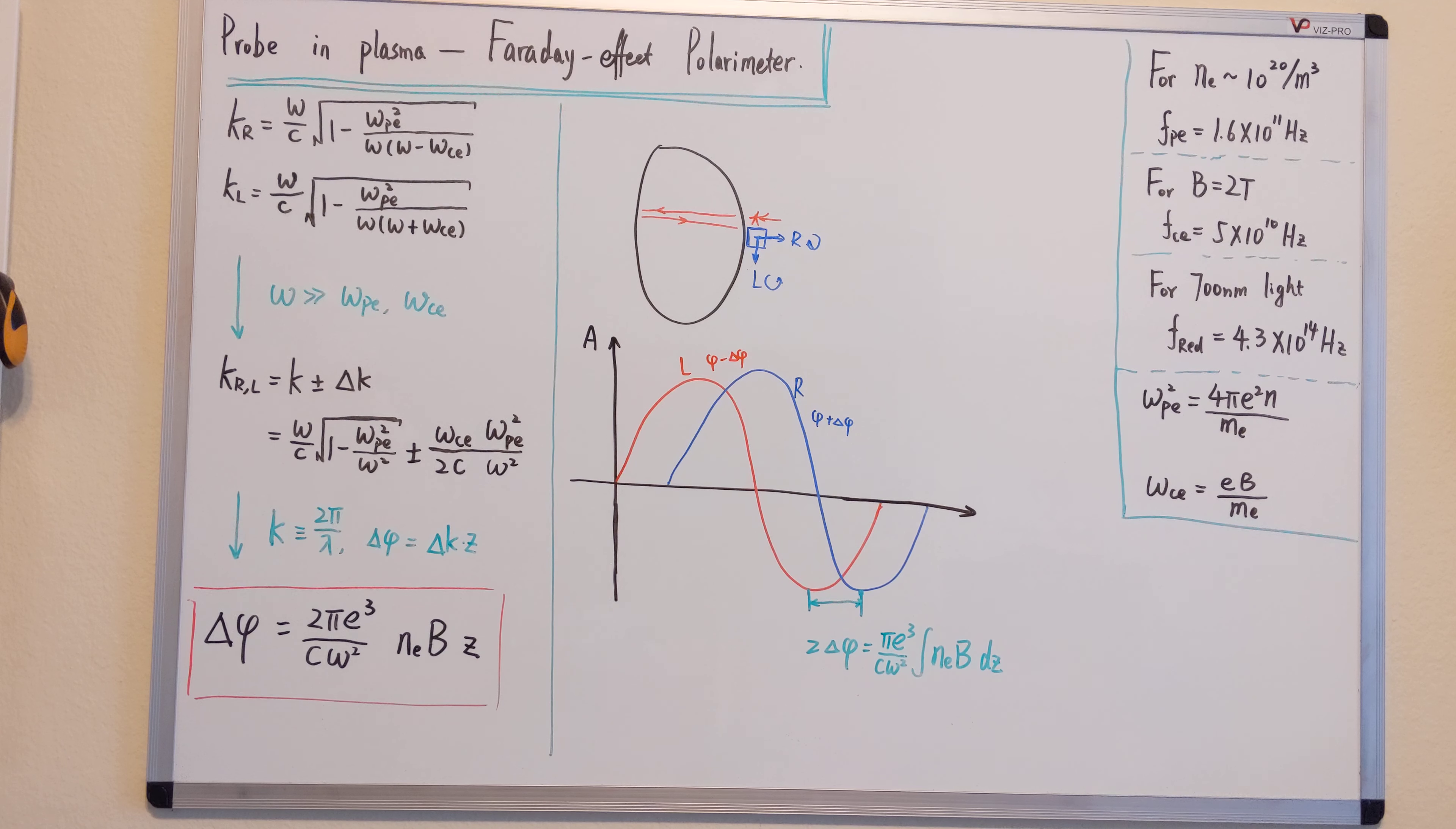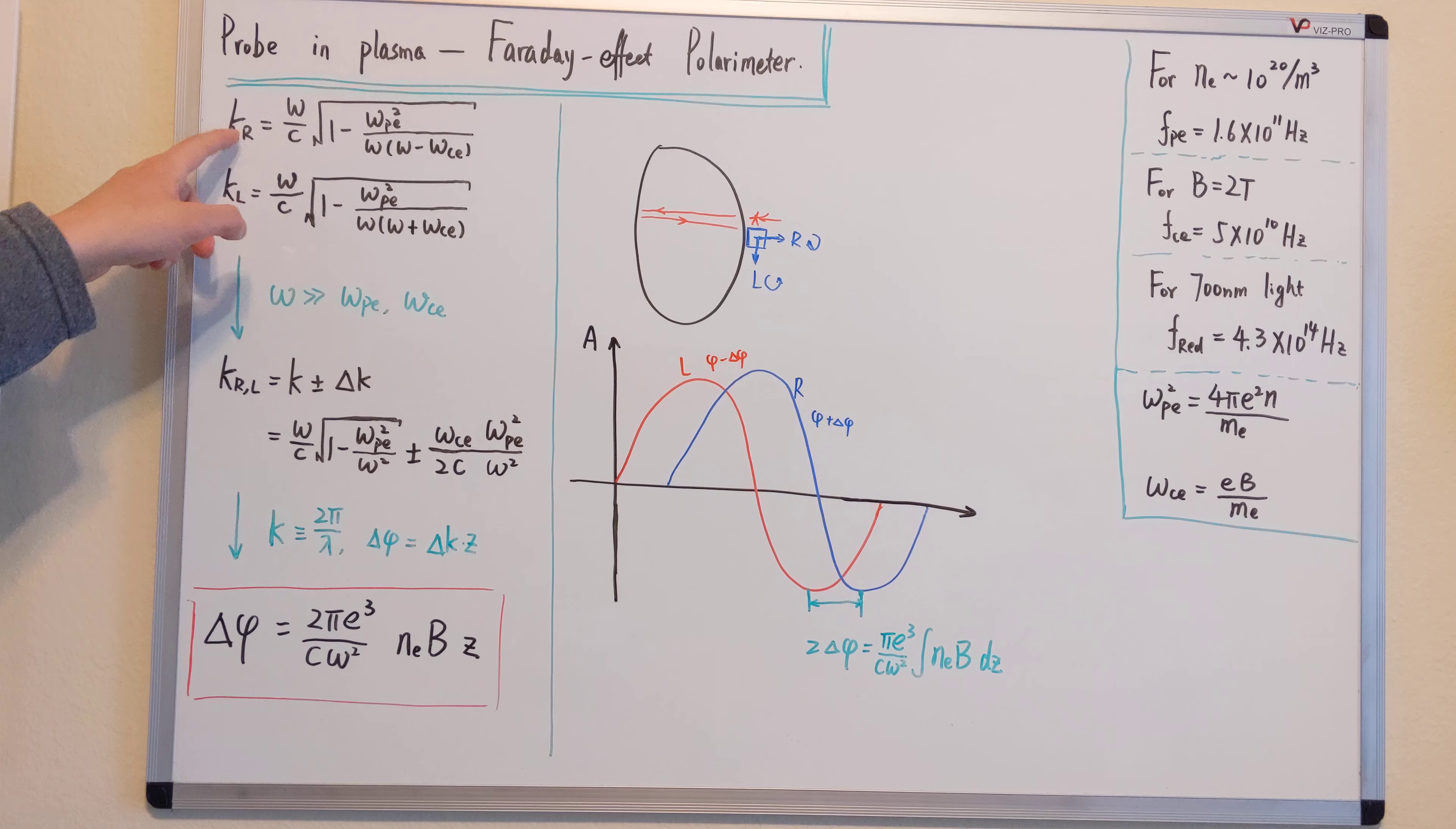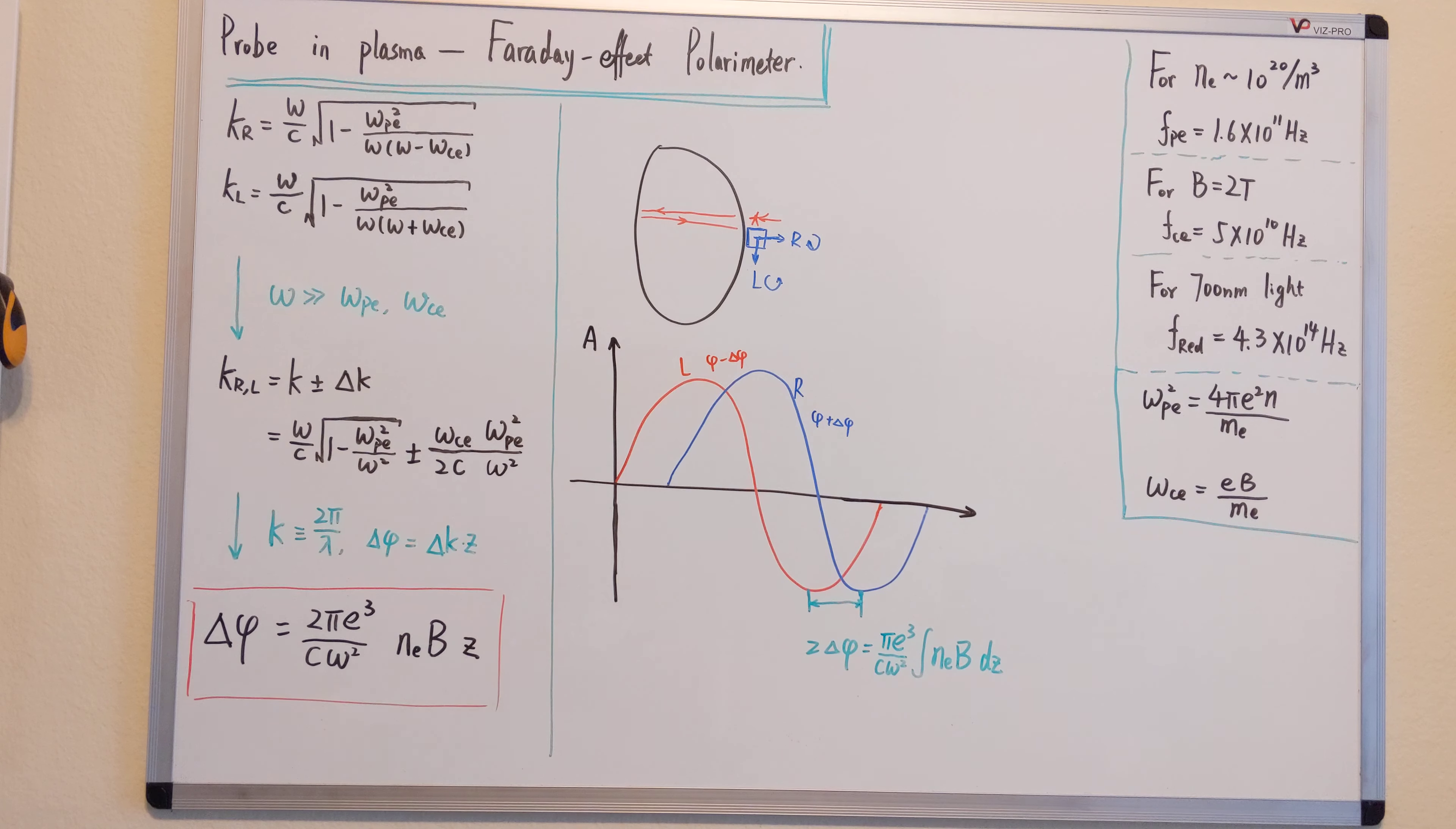Based on one of the videos I will link down below, the left-handed and right-handed polarized light have different phase velocity, given the frequency and density and magnetic field.